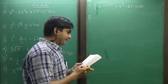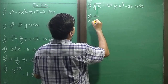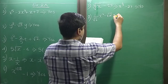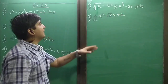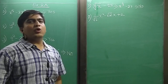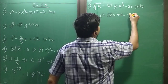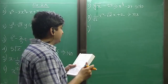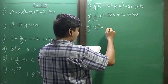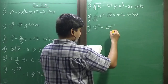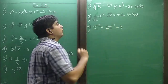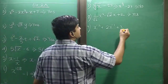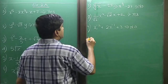Sum 8: 1 upon root 2 times x squared minus root 2 x plus 2. Yes, it is a polynomial. Sum 9: x raise to minus 2 plus 2x raise to minus 1 plus 3. These are negative integers, not whole numbers, so it is not a polynomial.